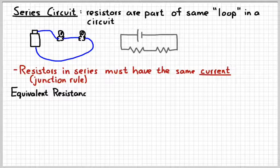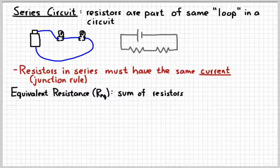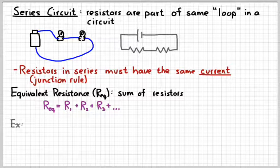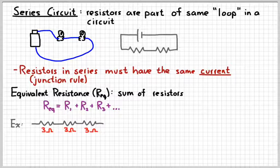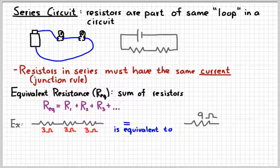The equivalent resistance, or REQ, is a fancy term that we give for the sum of the resistors. For series resistors, you simply add them up. So the equivalent resistance would be R1 plus R2 plus R3, etc., however many resistors you might have. For example, suppose you had three 3-ohm resistors added in series to each other — three 3-ohm resistors in series would be equivalent to a single 9-ohm resistor.